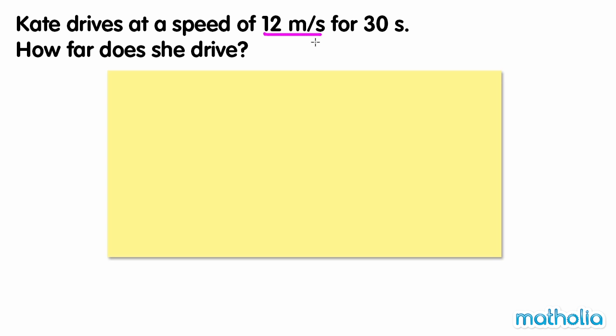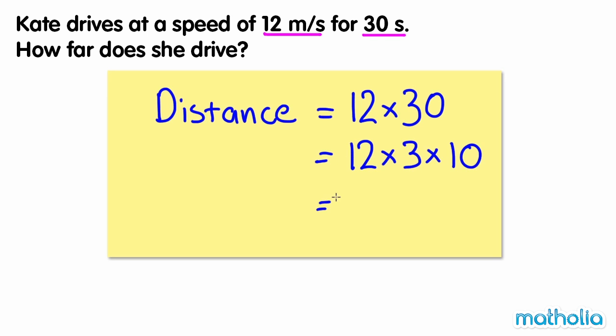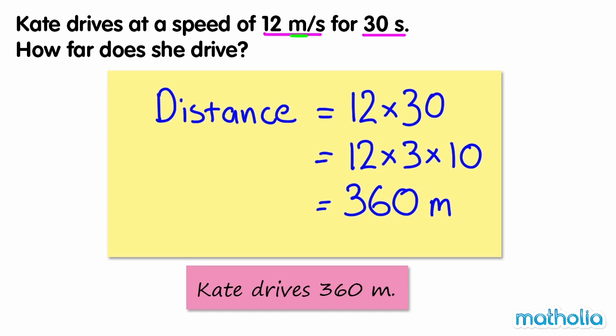First, check that the units of time are the same. They are both seconds, so we can multiply. 12 times 30 equals 12 times 3 times 10, which equals 360. So Kate drives 360 meters.